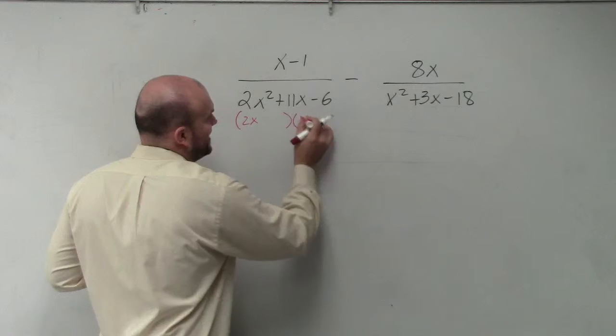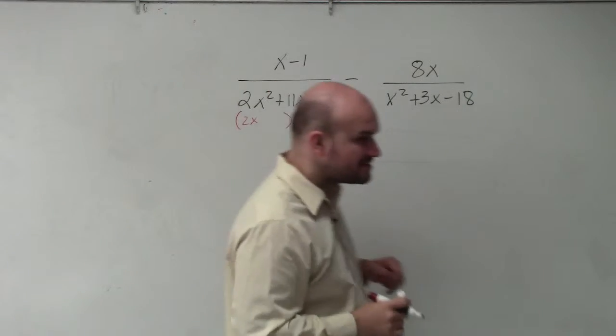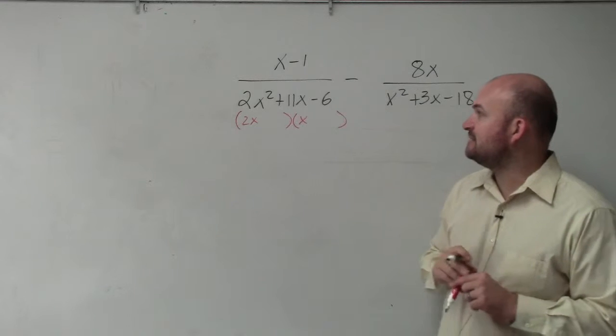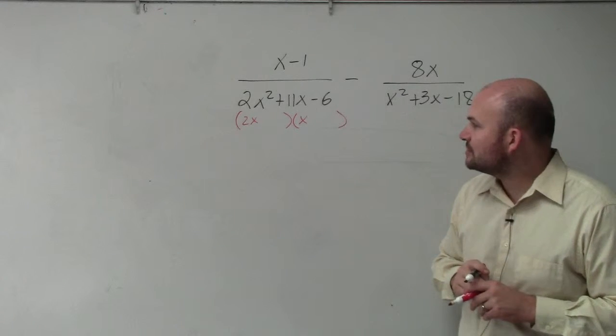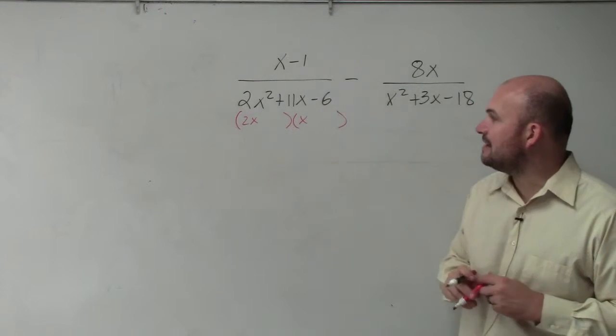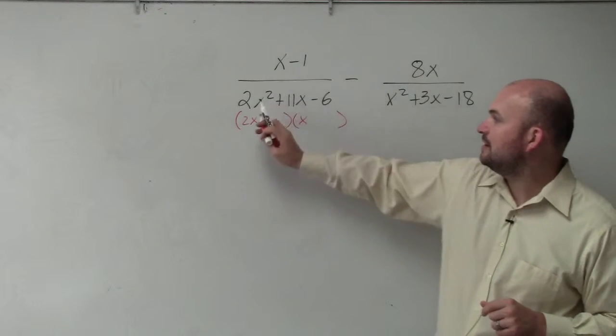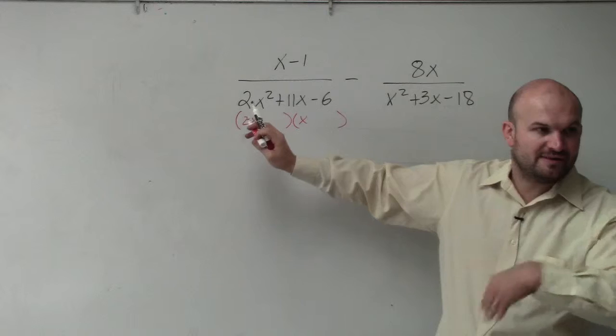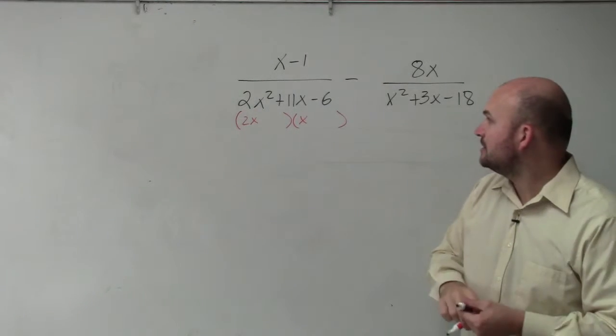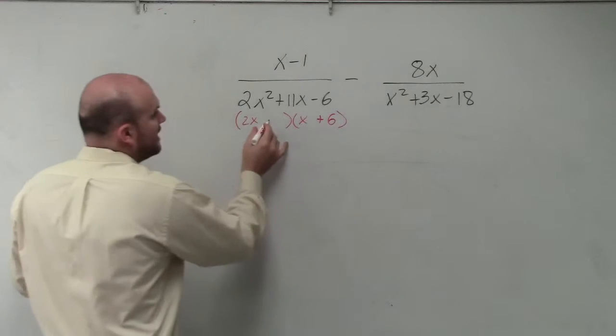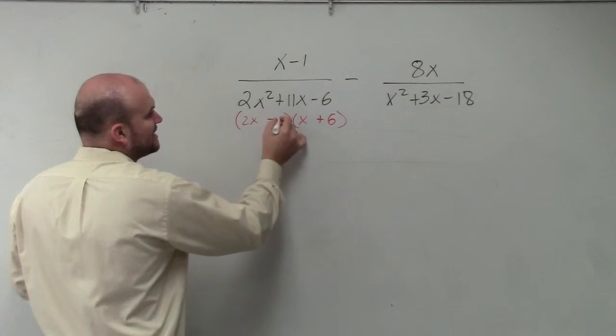So I'm going to look at, I know my two factors have to be x and 2x. And I also know that my last two terms need to multiply to give me negative 6. So what I see here to give me 11, if I did 2x times 6, that would give me 12. And then if I had that as a 1, if I made that minus 1, that would give me 11. So I need to make sure this is positive. So I'm going to do plus 6. And then I'm going to make this a minus 1.